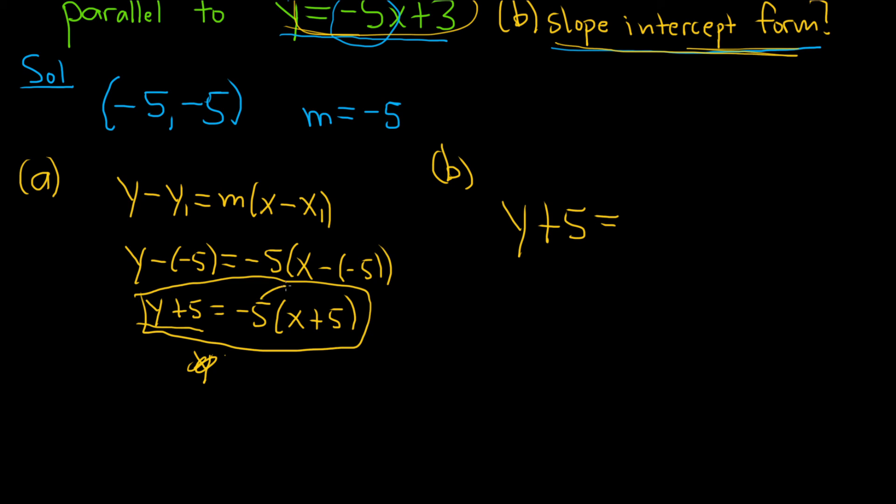Then we would distribute the negative 5. So negative 5 times x is negative 5x, and then negative 5 times 5 is negative 25. Then you just subtract 5 from both sides. So we have y equals negative 5x minus 30.